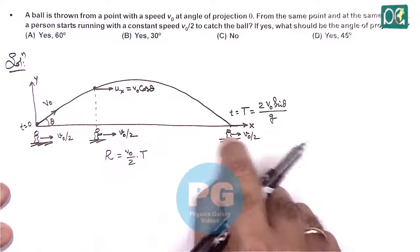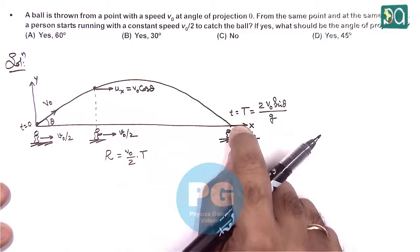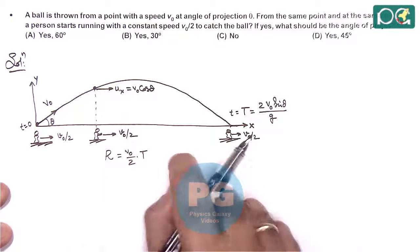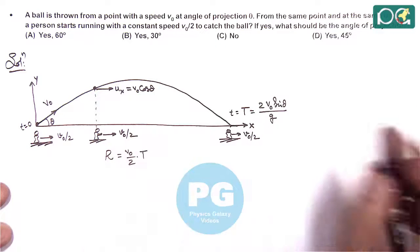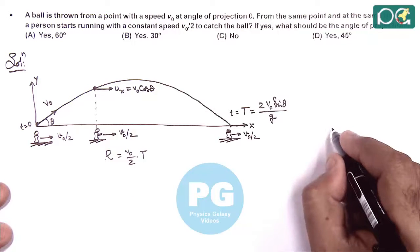So when man will reach here, the ball will also reach here. So one direct way of solving this question is by equating the two velocities.